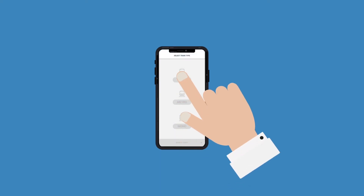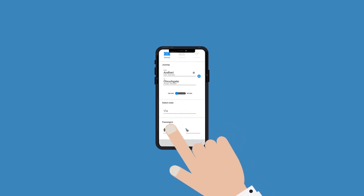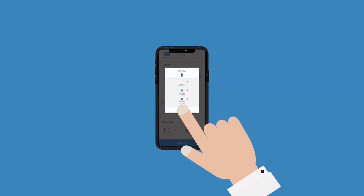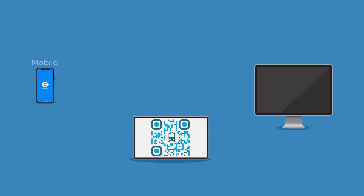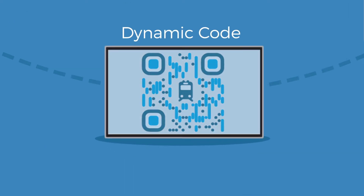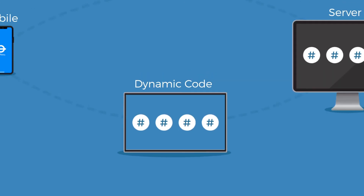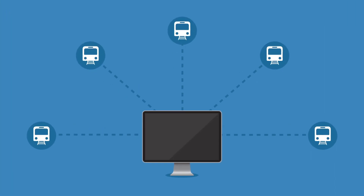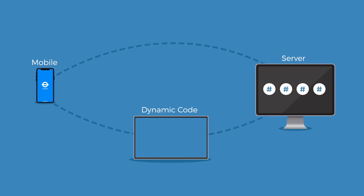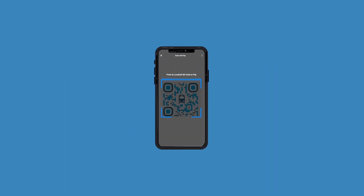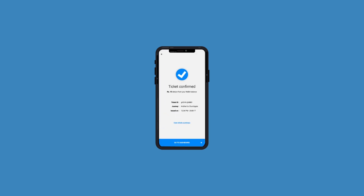Now let's see how it works on the backend. When a user signs up on Souffles, the main server records the data of each user with their unique user ID. When the user starts booking their first journey, they scan the dynamic code at the station. The dynamic code and the main server share a hidden password, and the server is connected to all stations. While scanning, the user's mobile gets that code and matches it with the server in order to confirm the ticket, which the user receives automatically.